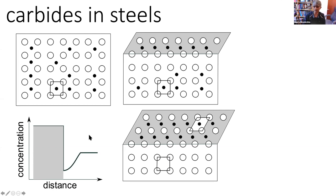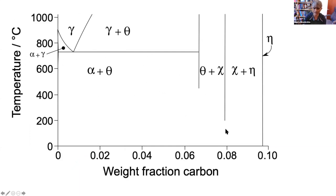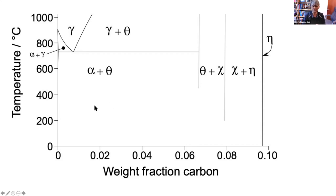Turning now to the iron-carbon phase diagram, we normally look at it up to the cementite limit of 6.67 weight percent carbon. But if you keep pumping carbon into iron, you get a two-phase field of theta plus chi carbide, then eventually cementite disappears and we end up with just chi carbide and eta carbide. These carbides form when carbon concentrations are very high, but you can also get them as transition carbides because cementite can be difficult to nucleate.